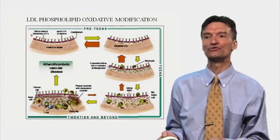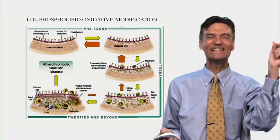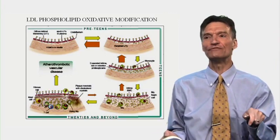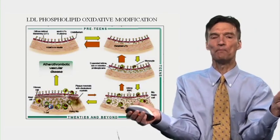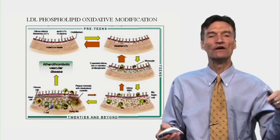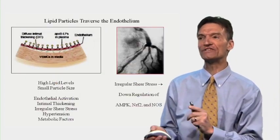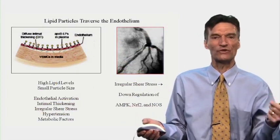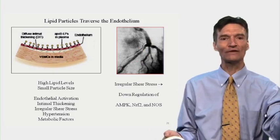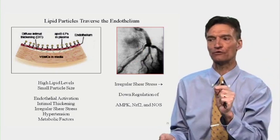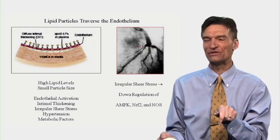Atherosclerosis begins when lipid particles infiltrate the artery wall — not inherently pathological because every cell in the artery wall has an LDL receptor and needs LDL as food. The problem occurs when lipids infiltrate at high levels and get trapped. Trapping occurs when phospholipids are oxidized by phospholipases, LDL clumps together, can't swim out, free radicals oxidize it, initiating inflammation. Lipid particles traverse the endothelium — favored by high numbers with small particle size. The initial weak point is beyond a branch where you have irregular shearing stress and poor laminar flow. We need laminar flow to activate AMPK, Nrf2, and nitric oxide synthase — loss of that gives endothelial dysfunction. This is why atherosclerosis is focal and predominantly beyond branch points.